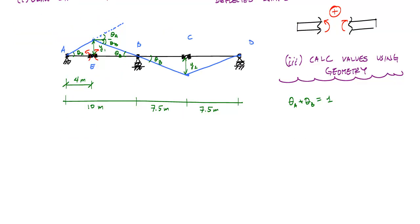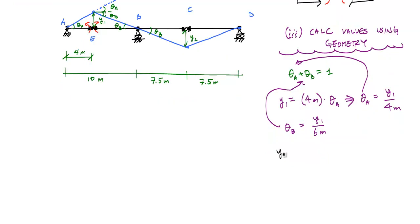So to get going with our geometry calculations, I know that the relationship between Y1 and theta A and 4 meters is that Y1 is equal to 4 meters times theta A. With small angle assumptions and small deformations, this is valid. I can rearrange this to be theta A is equal to Y1 over 4 meters. And I can do the same thing with theta B. Theta B is equal to Y1 over 6 meters. Now I can substitute these into this relationship here. Y1 over 4 meters plus Y1 over 6 meters equals 1. And I can solve for Y1, which tells me that Y1 is equal to 2.4 meters.